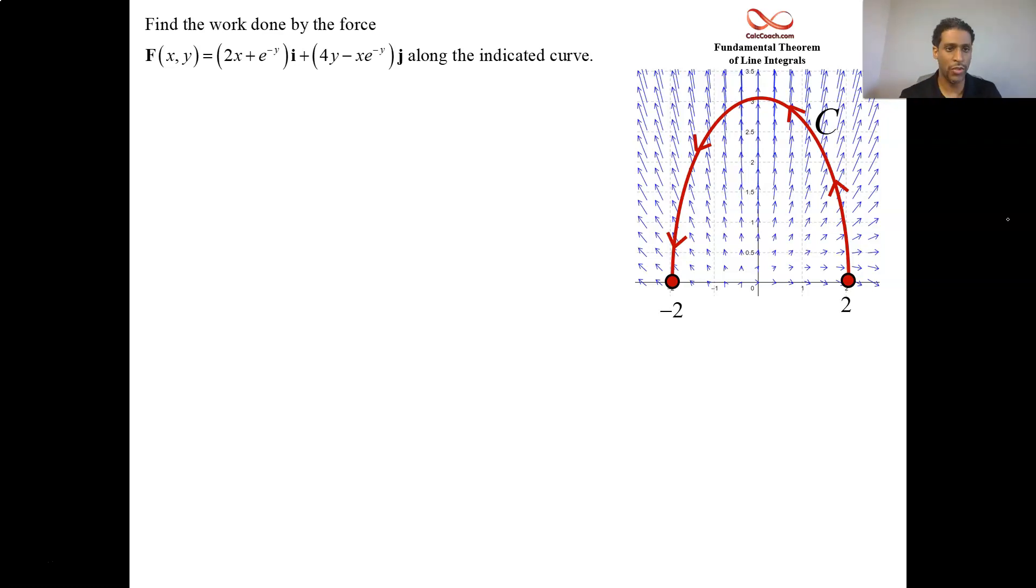We're going to see there's going to be a couple approaches. So let's go and find out what's going on with the p and the q. Is it possible that it's independent of path? Do we have to take that path? So if p is equal to 2x plus e to the minus y, and q is equal to 4y minus x e to the minus y, is it true that py equals qx? Well, py is minus e to the minus y, and so is qx. Well, that's great.